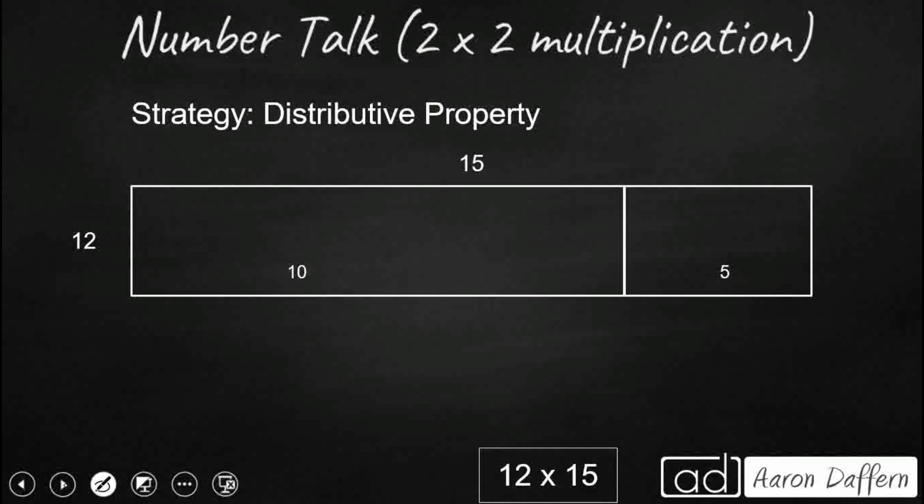Now we have the distributive property, but we're going to keep our 12 together. This time let's break up that other factor. Let's break up that 15. Let's break it up into place value. So you see we have our 10 and our 5. So it's going to be 12 times 10 plus 5.